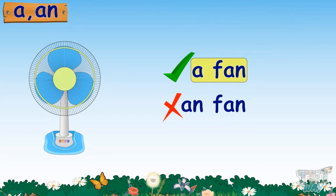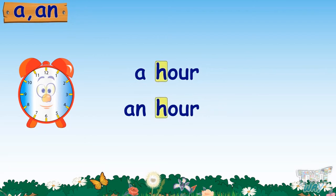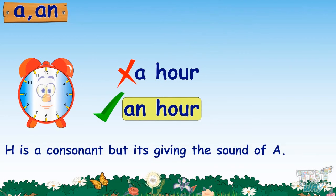Now here we have some tricky examples. How will you name 'hour'? Will you say 'a hour' or 'an hour'? It begins with the letter H, and H is a consonant. But when we say 'hour', we notice that it starts with a vowel sound of A and not with the sound of H. So we will use 'an' before it, not 'a'. We will say: an hour.